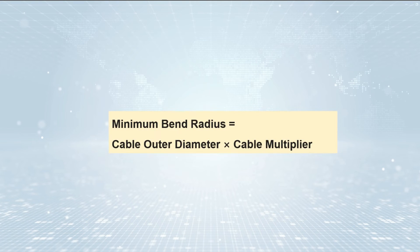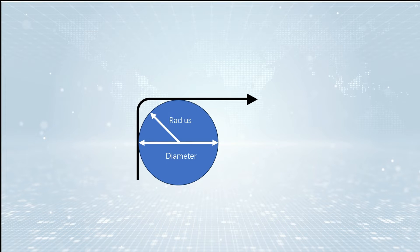Minimum bend radius is equal to cable outer diameter multiplied by cable multiplier. The normal recommendation for fiber-optic cable is the minimum bend radius under tension during pulling is 15 times the diameter of the cable. When not under tension, after installation, the minimum recommended long-term bend radius is 10 times the cable diameter.